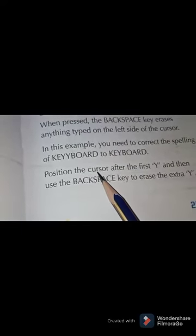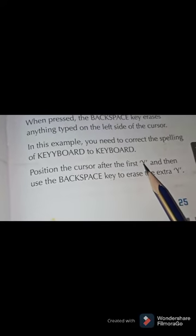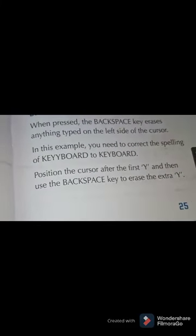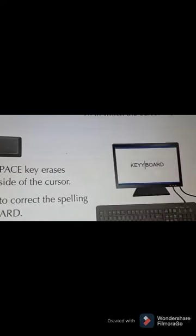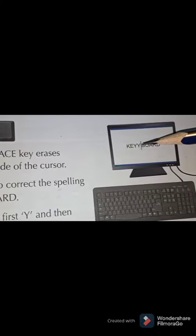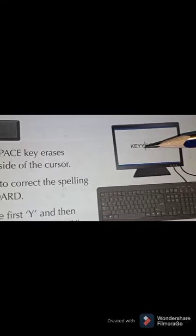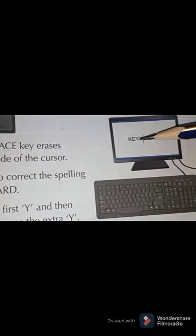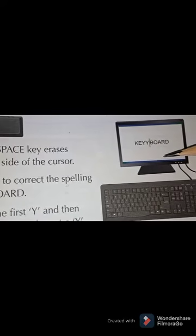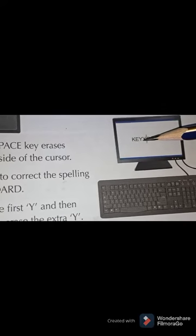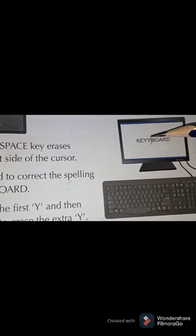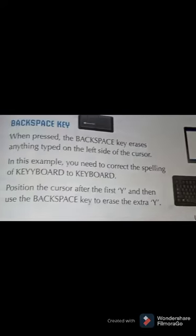As we read next: position the cursor after the first Y and then use the backspace key to erase the extra Y. As shown in the picture on the computer screen — K-E-Y-Y — we place the cursor after the first Y. That way, the extra Y will be erased and our spelling of 'keyboard' will be corrected.